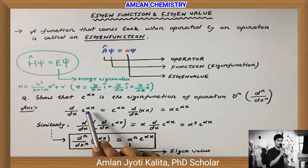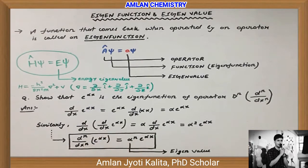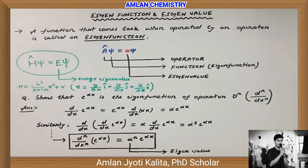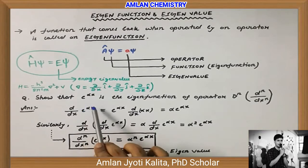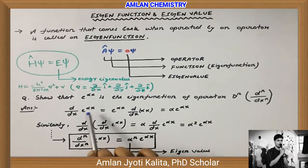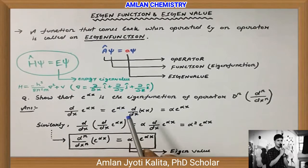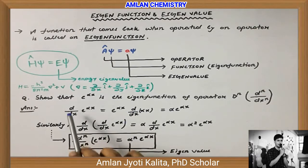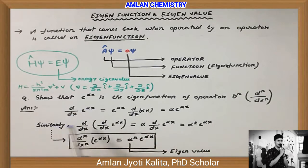Sab se pehle haam log e^(αx) ko ek time differentiate karenge: d/dx of e^(αx). Differentiation ka rule hai ki d/dx of e^x = e^x. Lekin yahan e^(αx) diya gaya hai, toh αx ko x maanke pehle differentiate karo — milega e^(αx). Phir αx ko differentiate karo separately: d/dx of αx, since α is a constant, gives α × 1 = α. Therefore, d/dx of e^(αx) = α · e^(αx).